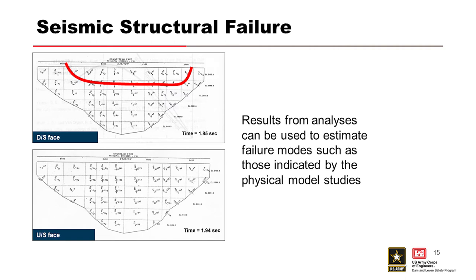Here are some example outputs from finite element analysis. These figures identify the tensile stresses on the upstream and downstream face of a particular arch dam. You can use this information and compare it to the tensile capacity, drawing lines normal to stresses that exceed capacity to determine whether you could develop an adverse cracking problem on both faces. Based on the orientation and location of those cracks, you can determine the potential to crack through as well.